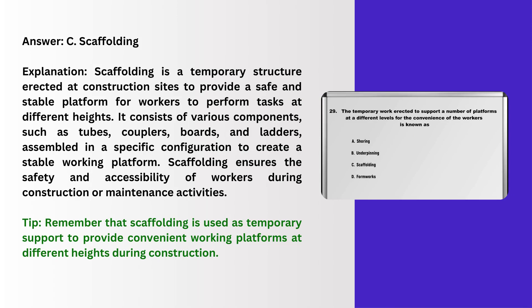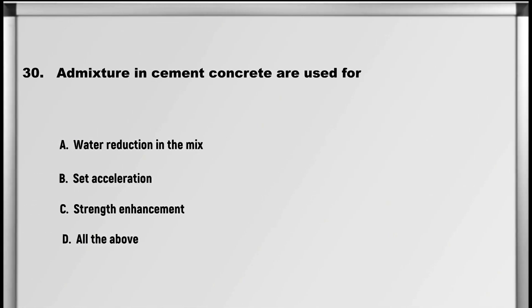Explanation: Scaffolding is a temporary structure erected at construction sites to provide a safe and stable platform for workers to perform tasks at different heights. It consists of various components such as tubes, boards, and ladders assembled in a specific configuration to create a stable working platform. Scaffolding ensures the safety and accessibility of workers during construction or maintenance activities. Tip: remember that scaffolding is used as temporary support to provide convenient working platforms at different heights during construction.